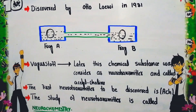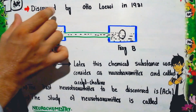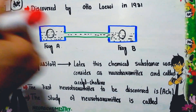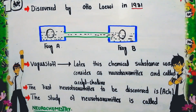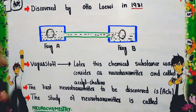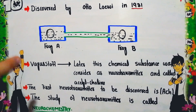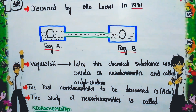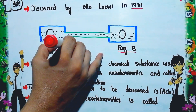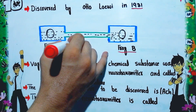The existence of neurotransmitters was first discovered by Otto Loewi in 1921. He performed an experiment in which he took two frogs — Frog A and Frog B. The heart of Frog A was intact and connected with the vagus nerve.